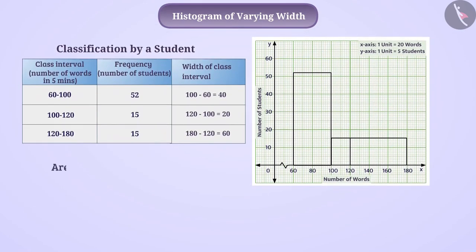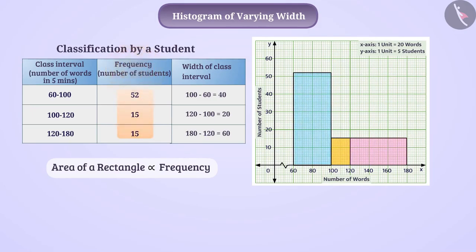We know that the area of a rectangle in a histogram is proportional to the frequency it represents. According to this, the area of each rectangle should be proportional to the frequency. Since the frequencies of the class interval 100 to 120 and the class interval 120 to 180 are the same, the areas of rectangles representing them should also be the same, but the areas of both appear different here. We can also understand this mathematically.